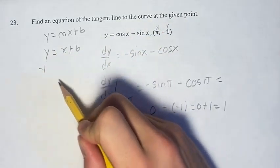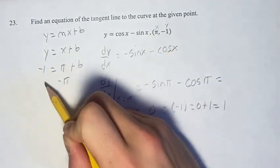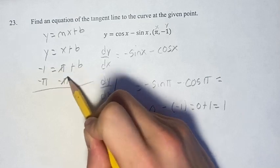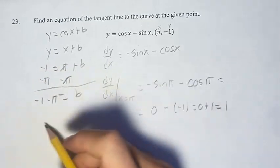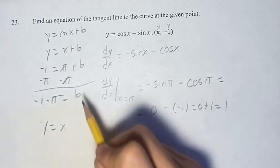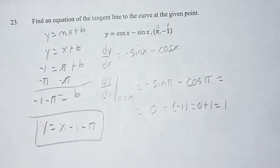So negative 1 for y equals pi plus b. Subtracting pi from both sides, these cancel, and you get b equals negative 1 minus pi. So we have y equals x minus 1 minus pi, and that's your tangent line.